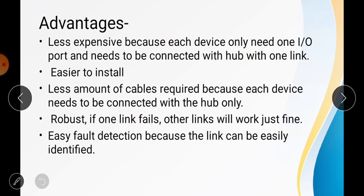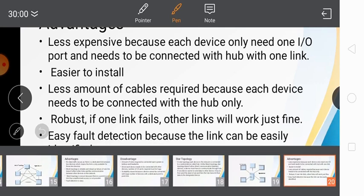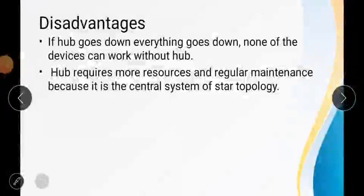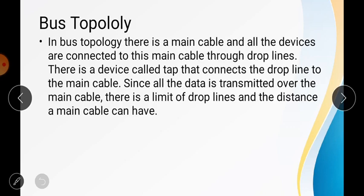Advantages of star topology include: it is less expensive because fewer wires are used; it is easy to install; it is robust — if one link fails, other links continue working normally; and fault detection is easy. The main disadvantage is that all communication depends on the hub — if the hub fails, the whole network goes down. The hub requires more resources and regular maintenance because it is the central system of the star topology.